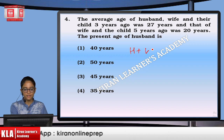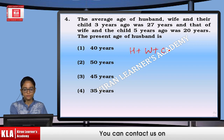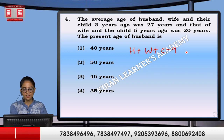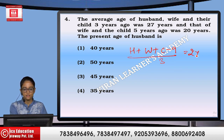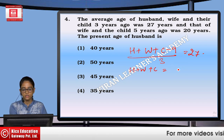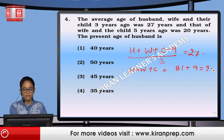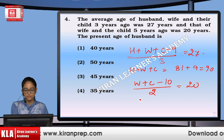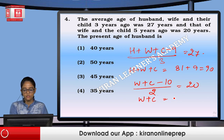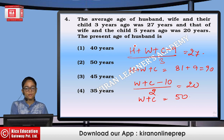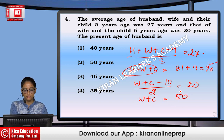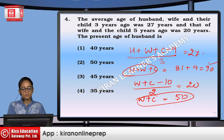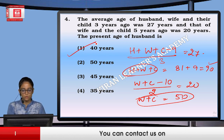The average age of husband, wife, and child three years ago was 27, so the sum of their current ages is 81 plus 9, which equals 90. The average age of wife and child five years ago was 20, so their sum was 50. The present sum of all three is 90, and wife plus child is 50, so the husband is 40 years. Option number 1.